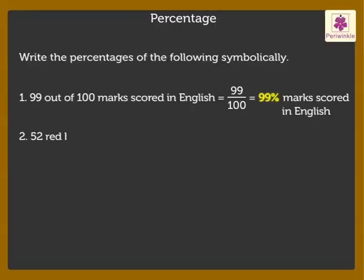Next, 52 red boxes out of 100. That means 52 upon 100, which is equal to 52% red boxes.